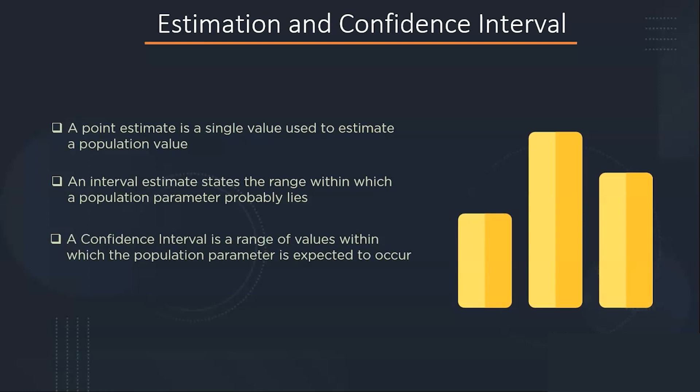The confidence interval is a range of values. It is expressed as a percentage and it is expected to contain the best estimate of a statistical parameter. The two most frequently used confidence intervals are 95 percent and 99 percent.